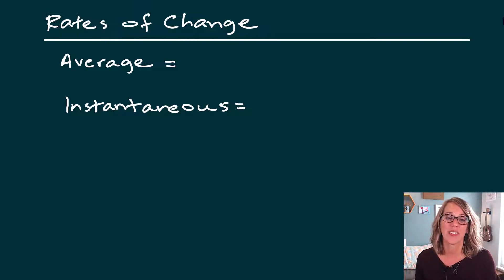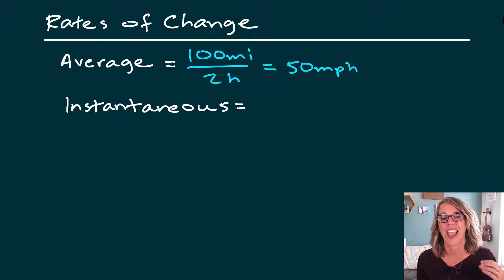So for example, let's say that you drove 100 miles and it took you two hours to drive those 100 miles. So if I do the math here, that means that on an average of 50 miles per hour. That is my average rate of change.